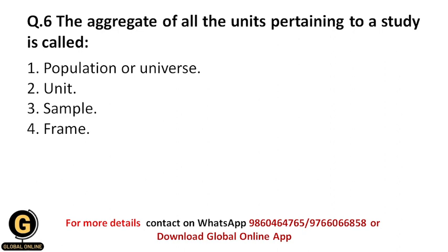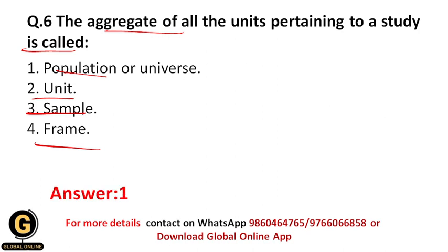Question six: The aggregate of all the units pertaining to a study is called — population or universe, unit, sample, or frame? It is called population or universe, because population or universe comprises all the units relevant to a research study. When you aggregate all these units, you form a whole population or universe. So the correct answer is 1.